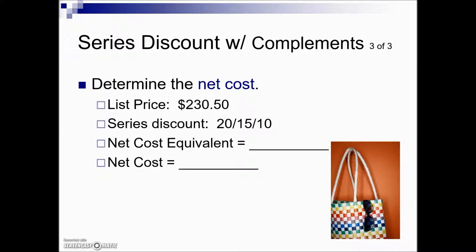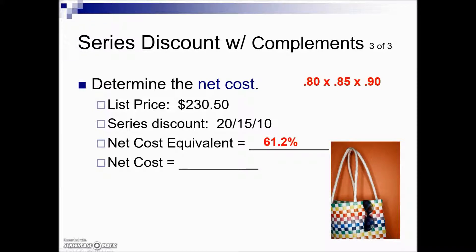One more problem: given the list price and a series discount of three discounts, we calculate the net cost using the complements method. The complement of 20% savings means you're paying 80%; complement of 15% savings means you're paying 85% (100 minus 15); and complement of 10% savings means you're paying 90% (100 minus 10). Multiplying those three complements together means the net cost is 61.2% of the list price. We then take base times rate to find the net cost.